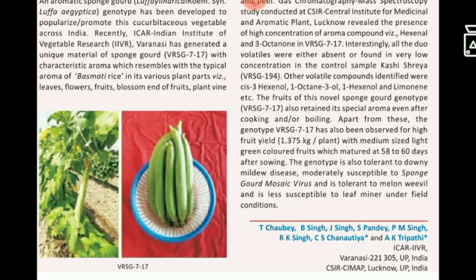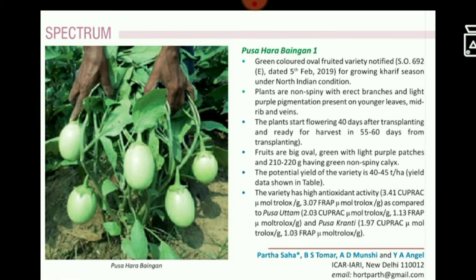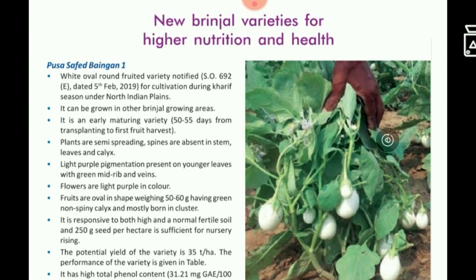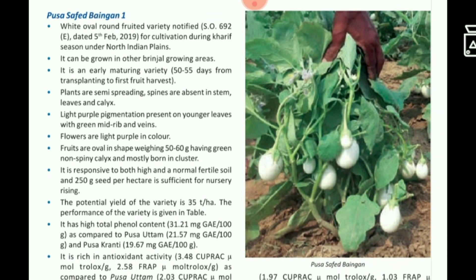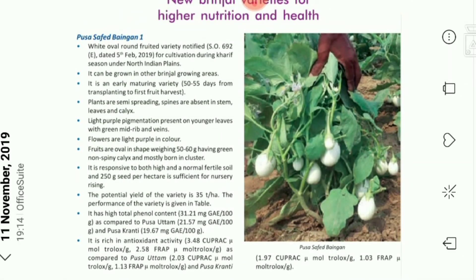Next is a new brinjal variety, Pusha Harawagon, which is a green colored oval fruit variety rich in antioxidants. Another unique new brinjal variety is Pusha Safed Wagon 1, a white oval round fruit variety. It is an early maturing variety with light purple flowers, maximum phenol content as compared to Pusha Uttam and Pusha Kranti, and it is also rich in antioxidant activity. These are the new updates recently published from ICAR.